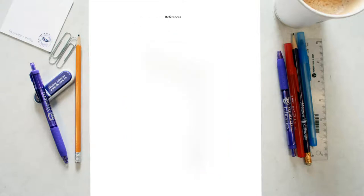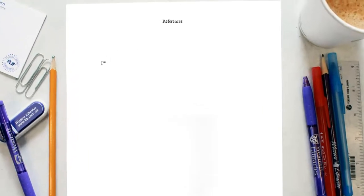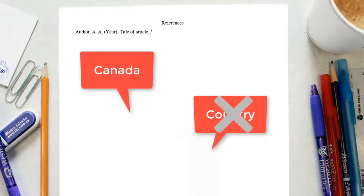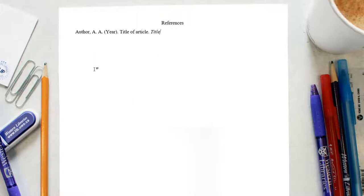Regardless of the number of authors, your reference section entry should follow this basic format. Authors are written as last name followed by initials. The author is followed by the publication year, which goes in brackets followed by a period. The title of the article is in sentence case, meaning only the first word and proper nouns in the title are capitalized. So you can capitalize Canada in a title but you wouldn't capitalize the word country. The journal or magazine title is in title case, ending with a comma, and is italicized.